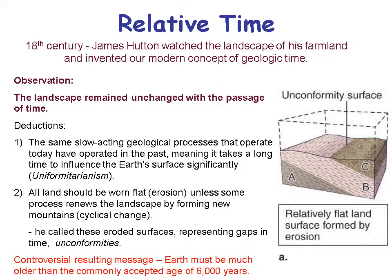Another deduction might be that all land should be worn down flat unless some process renews the landscape by forming new mountains — cyclical change. The problem with Hutton's conclusion was that the Earth must be older than 6,000 years, and so there was a controversy between what you observe in nature and what people had generally interpreted the Bible to say. We still have that controversy today.